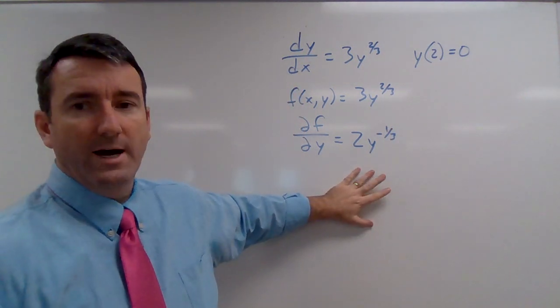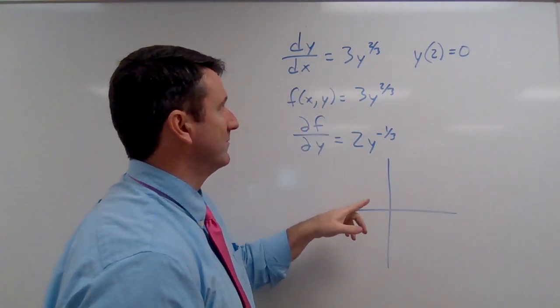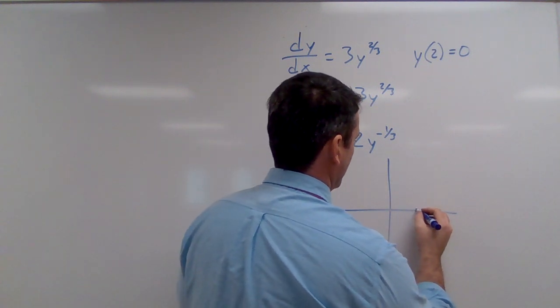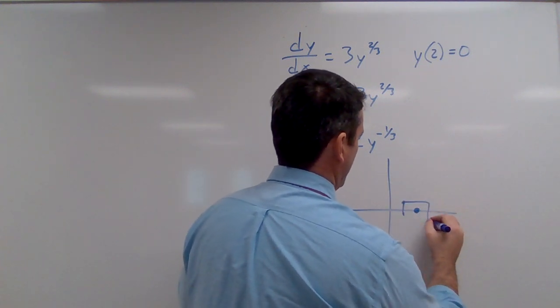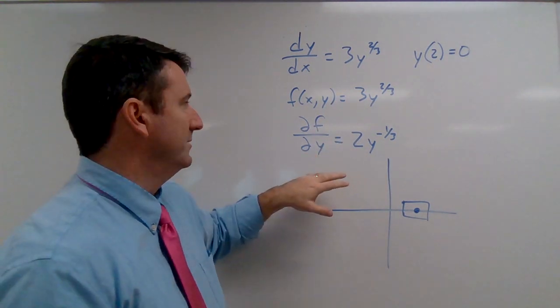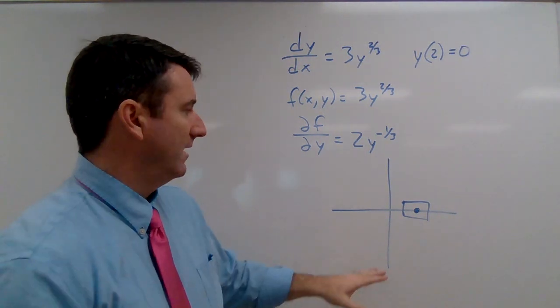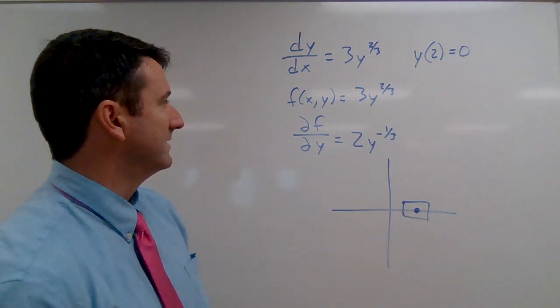Alright. So now the question is, can we draw some rectangle around the point two zero? Can we draw some rectangle here where both of these are going to be continuous throughout this rectangle?